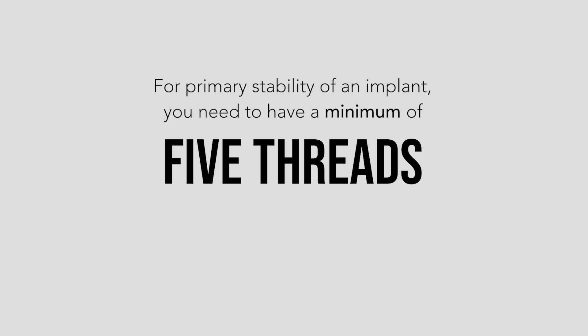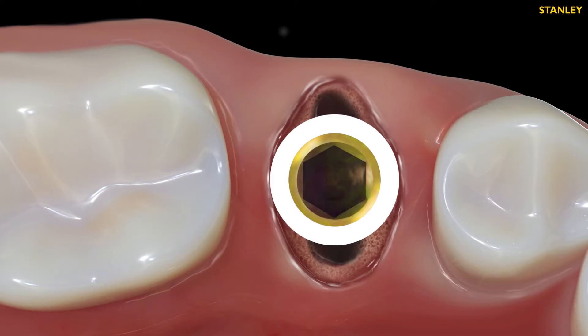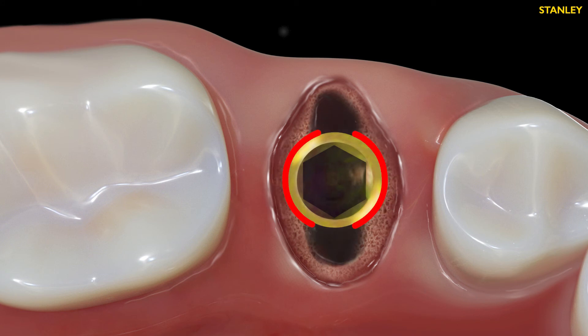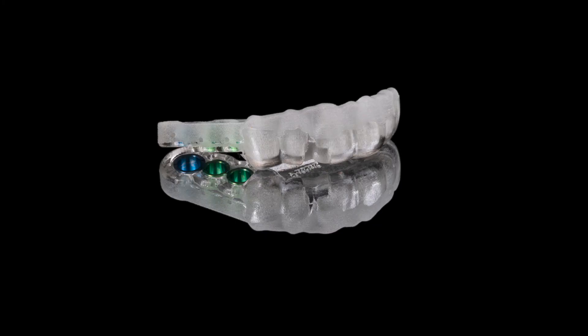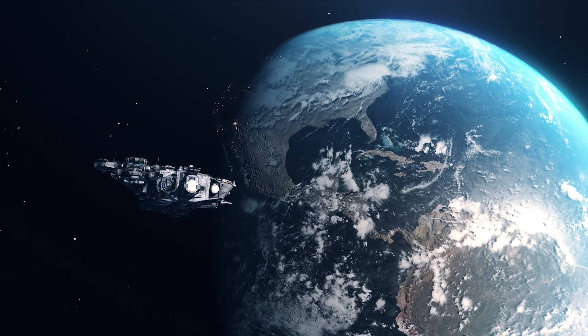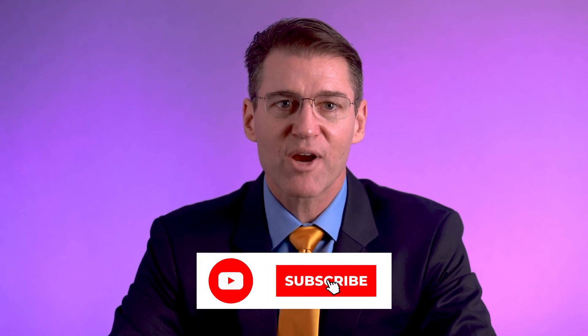It's that simple. Remember, for primary stability of an implant, you need to have a minimum of five threads embedded in bone. The threads do not have to have circumferential coverage, but you need at least bisocket stabilization for it to work. Make sure you use your surgical guide and graft the gaps. Suddenly, you'll be able to place implants where others won't — you'll be able to boldly go where no man has gone before. If you like this video and want to learn more about the cutting edge of dental implantology, subscribe to the channel or check us out at stanleyinstitute.com. This has been another episode of Implants Made Simple.